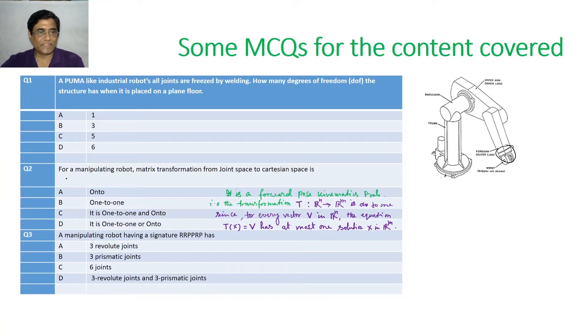Now, second question is, for a manipulating robot, matrix transformation from joint space to Cartesian space is the mapping: onto, one-to-one, one-to-one and onto, or one-to-one or onto. So, this is a set, a little bit of set theory, which perhaps you know. Say, I have Cartesian space, denoted by X, and I have a joint space, theta.